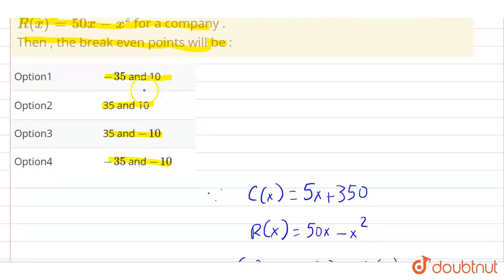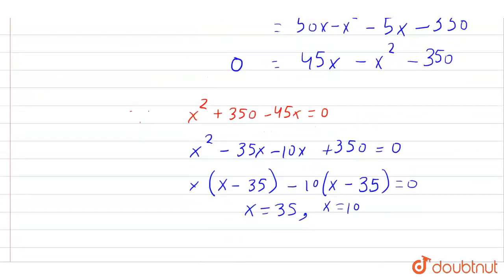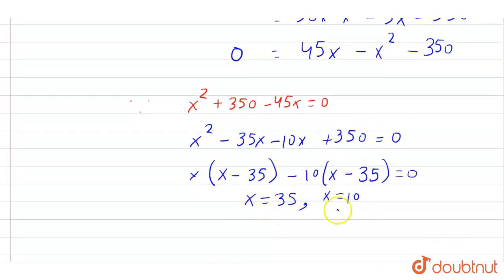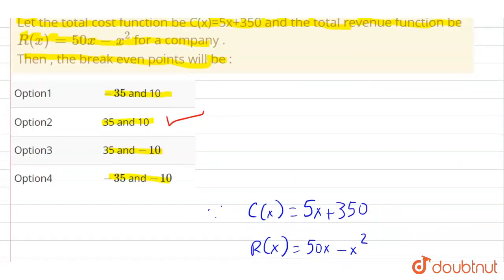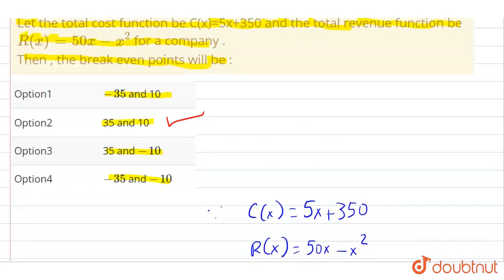So from here, Option 2, that is 35 and 10, is the correct answer because the break-even points are x equals 35 and x equals 10. So Option 2 is the correct answer. Thank you.